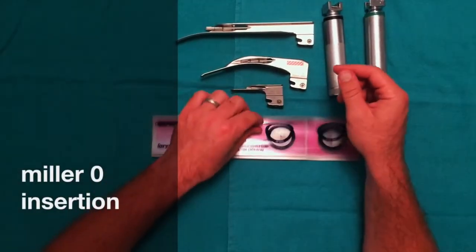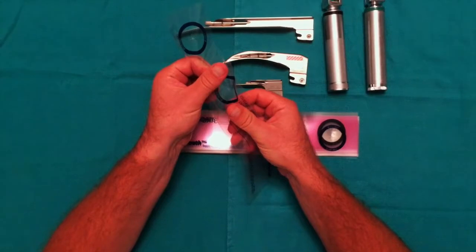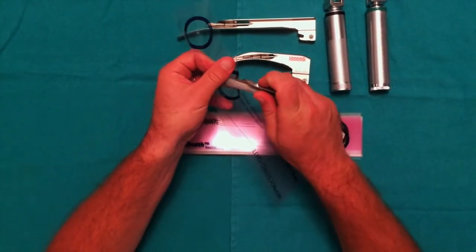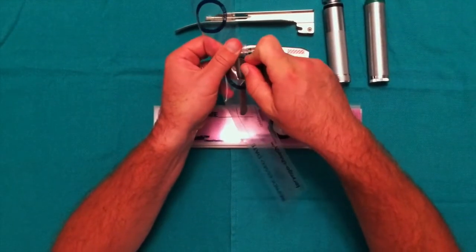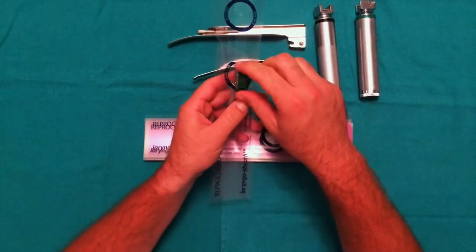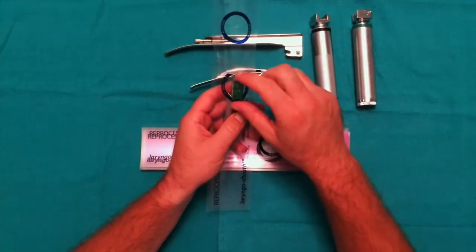Now we'll demonstrate how to insert a Miller-0 laryngoscope blade into the laryngoscope sheath. Separate the plastic, insert the blade tip, and press down until it rests in the first blue circle.